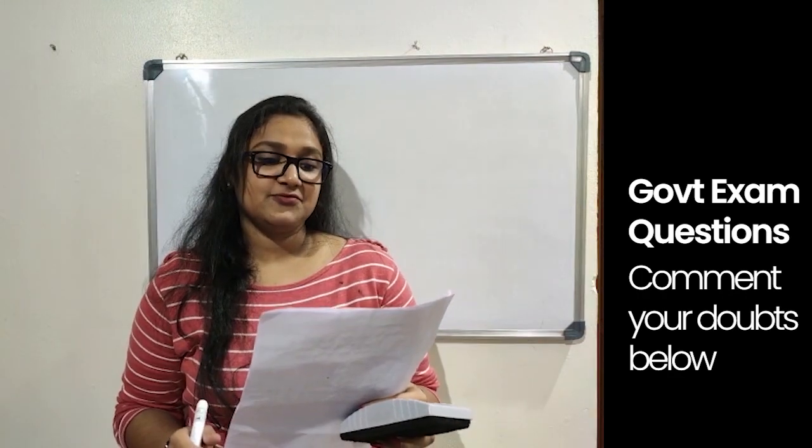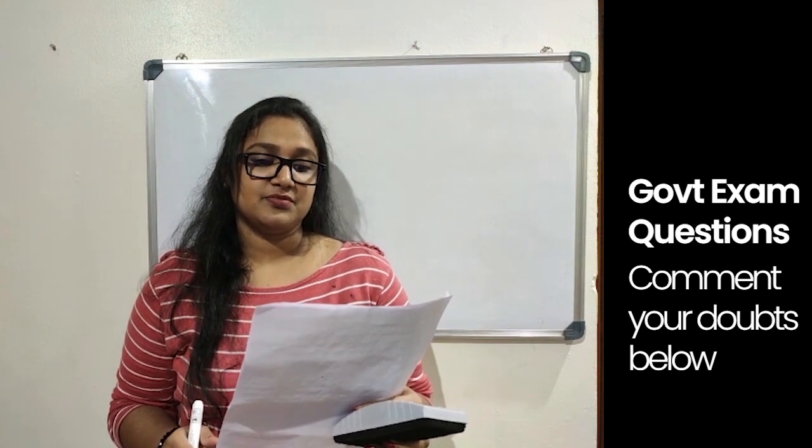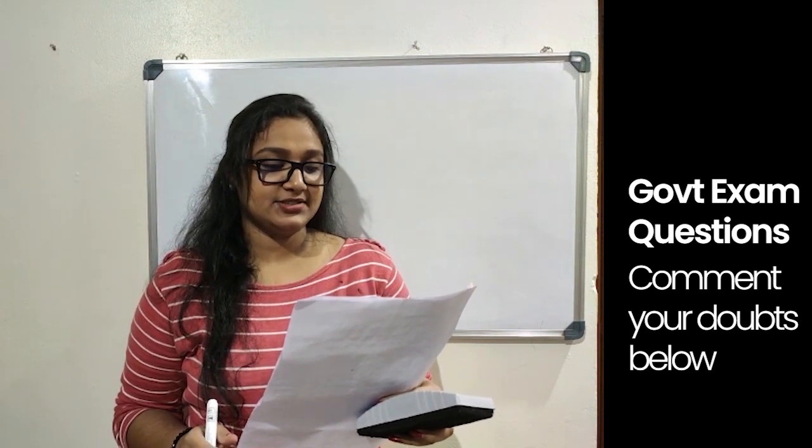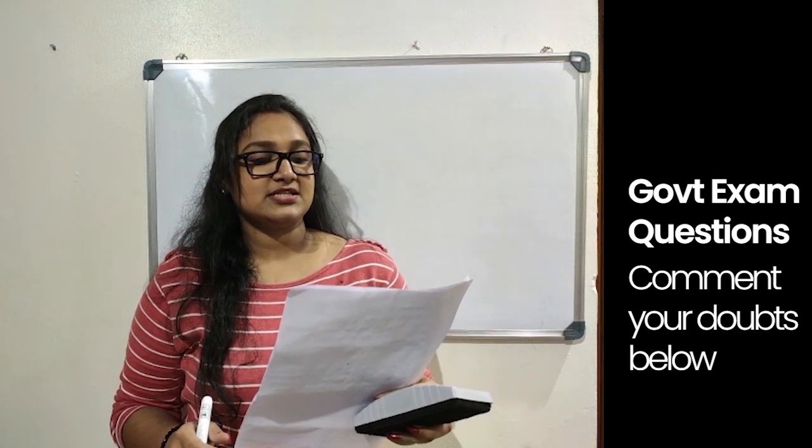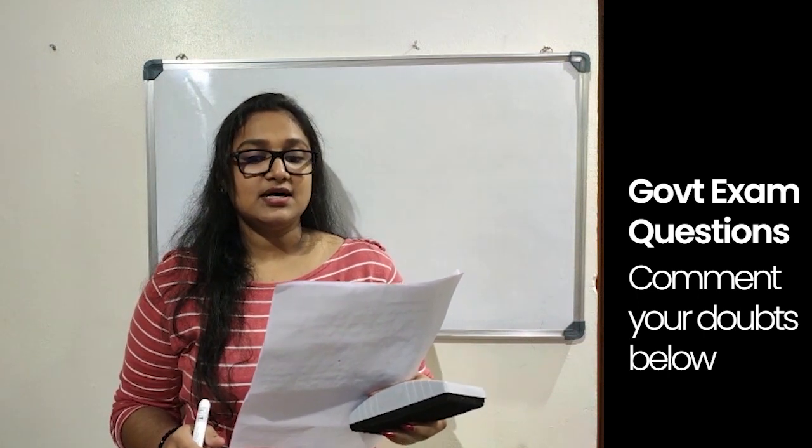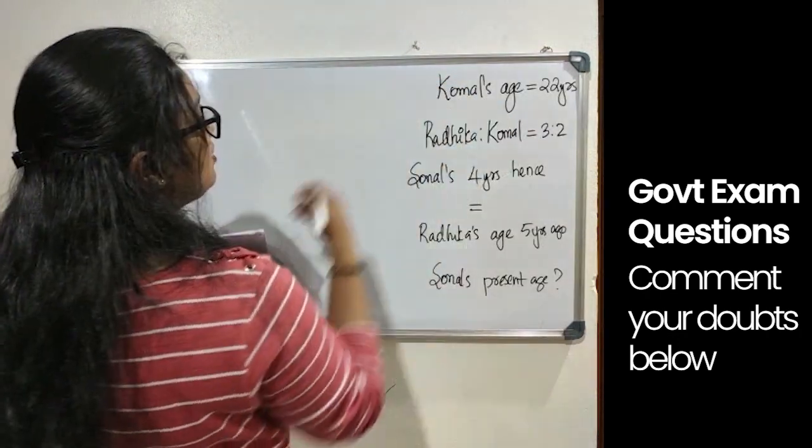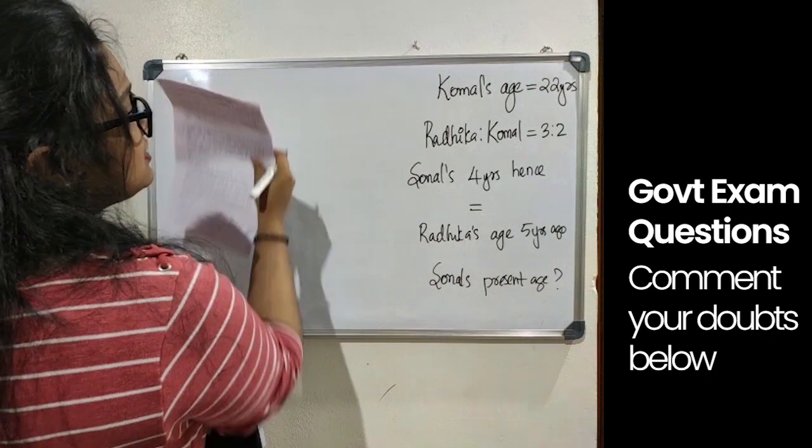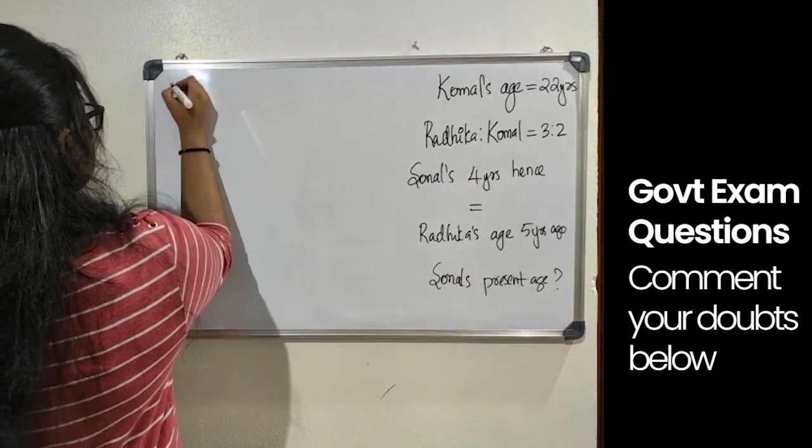Sonal's age 4 years hence will be equal to Radhika's age 5 years ago. If the respective ratio between Radhika's present age and Kamal's present age is 3 is to 2, and Kamal's present age is 22 years, what is Sonal's present age?